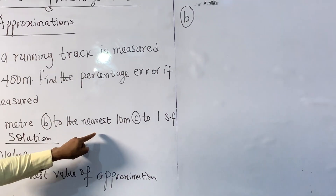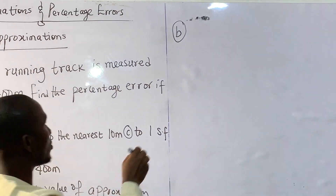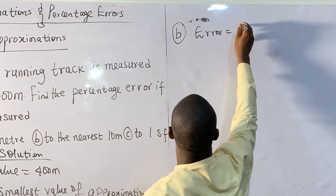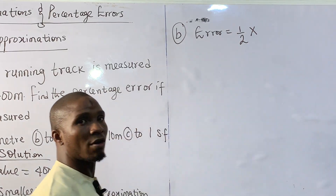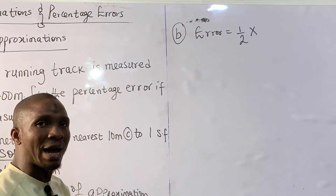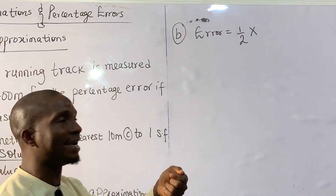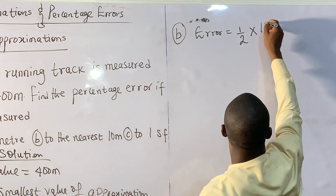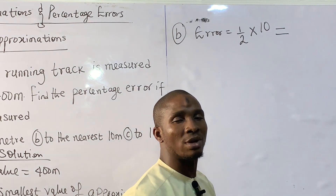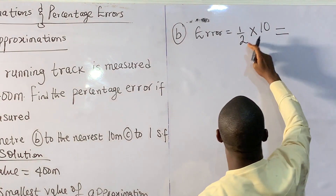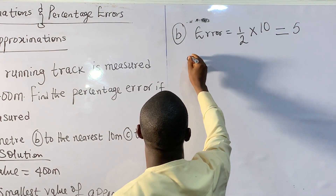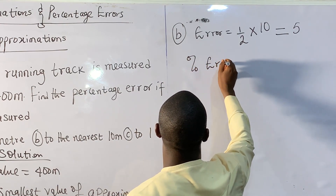Question (b) says to the nearest 10 meters. We calculate the error again: 1 over 2 times the smallest value of approximation. The smallest value of approximation when approximating to the nearest 10 meters is 10. So 10 divided by 2 gives us 5 — the error is 5.